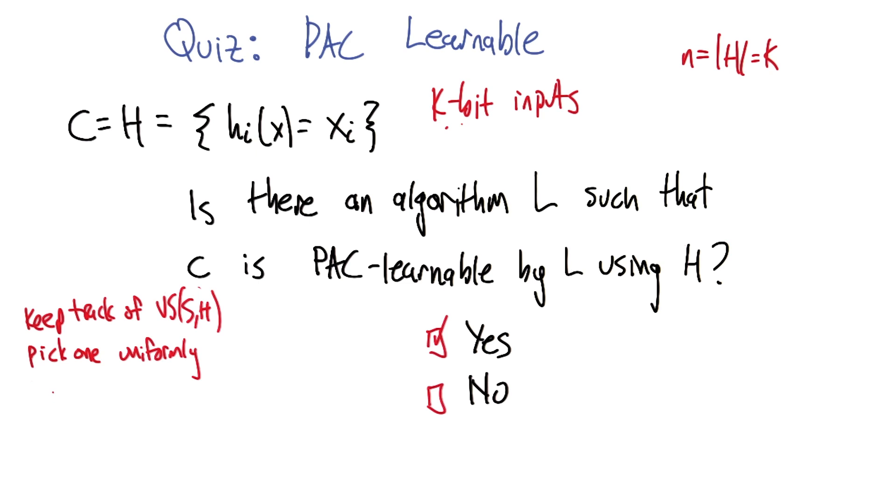So there's sort of no better algorithm than the one that we just came up with, which is find all the hypotheses that are consistent. And you have no reason to choose one over the other because you don't have any more data. So you should just close your eyes and pick one.